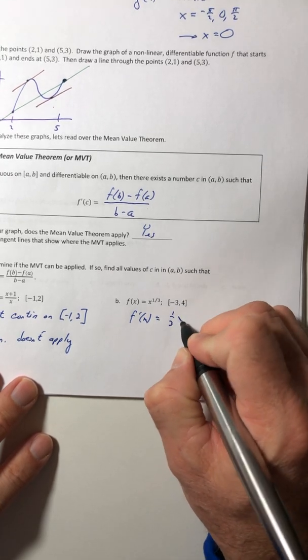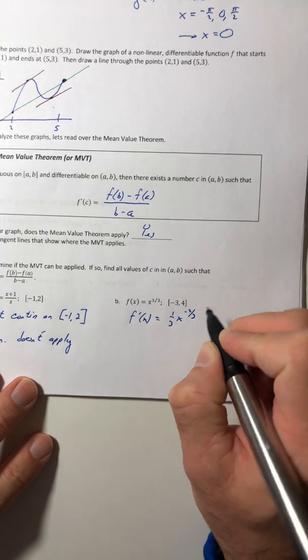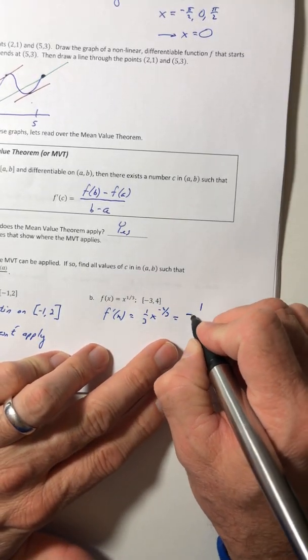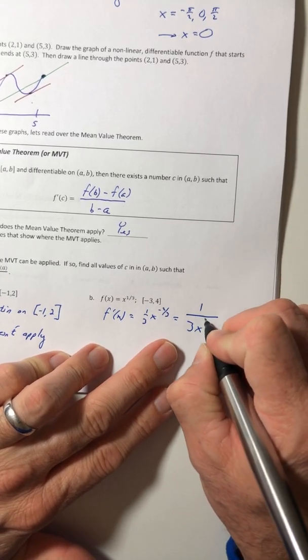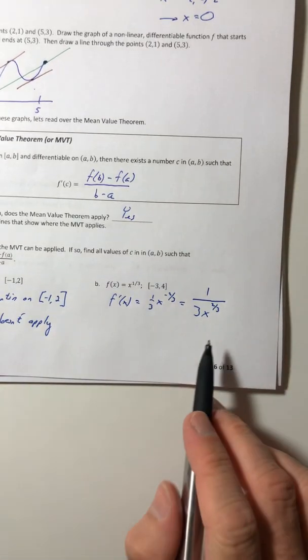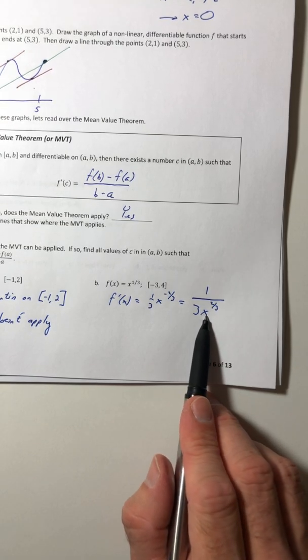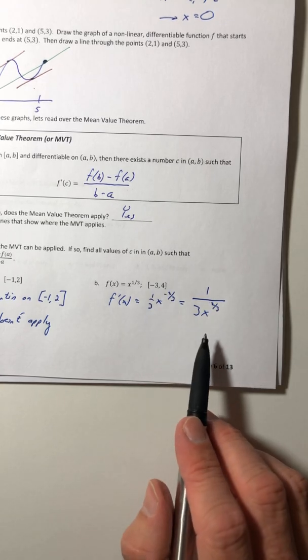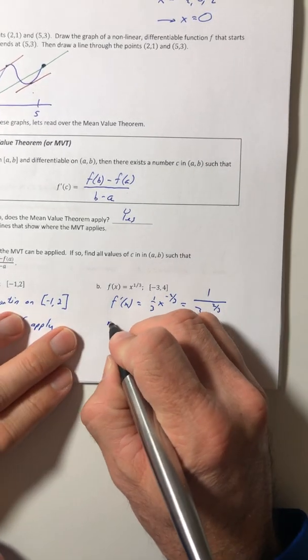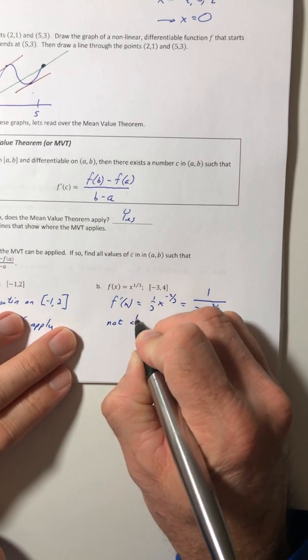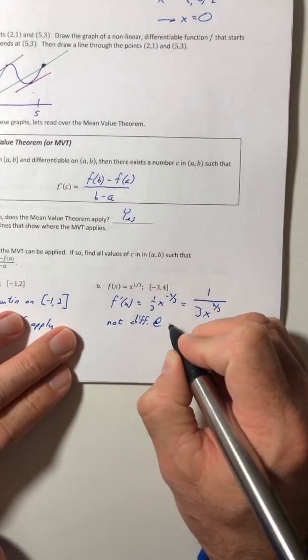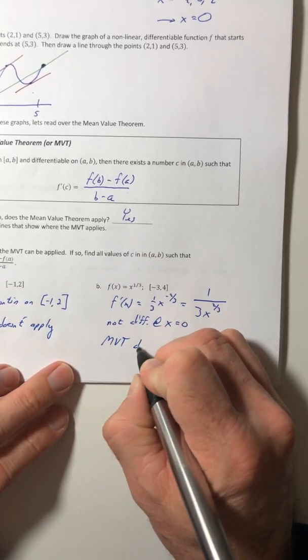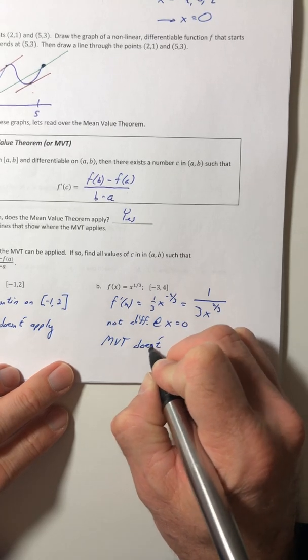So that would be one-third x to the negative two-thirds, or one over three x to the two-thirds. Is there a number that you can't plug in for x? Yeah, that would be x equals zero. Is it inside the interval? Why, yes it is. So it's not differentiable at x equals zero, so the mean value theorem doesn't apply.